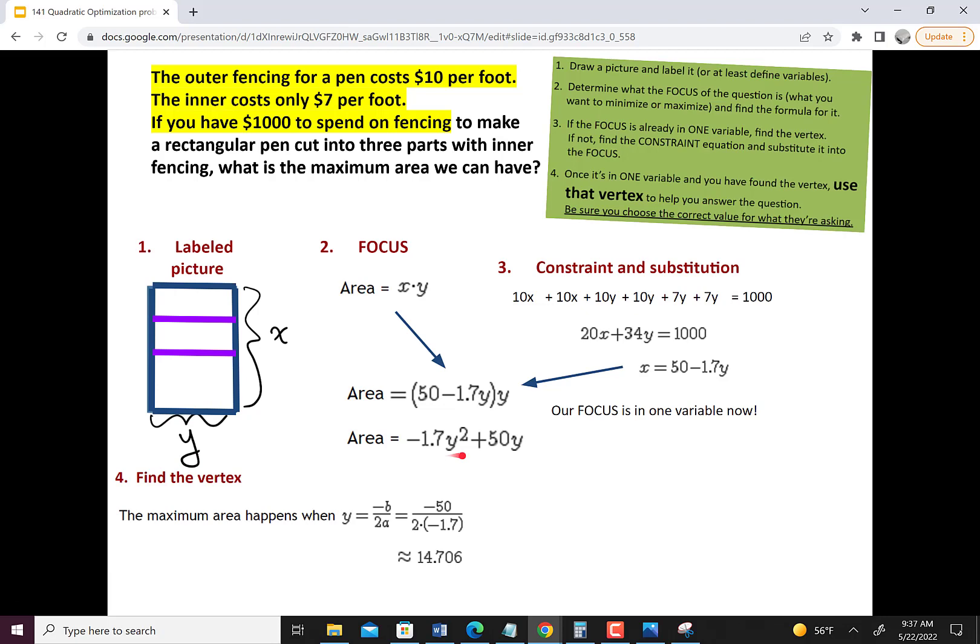And of course, the formula is in terms of y, so this is y equals negative b over 2a, and we end up with this 14.7. That's one coordinate, but we don't really need to find the full vertex. We just need to find something about it, and it depends on what the question is.